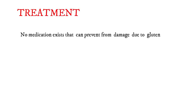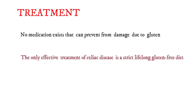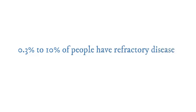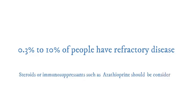No medication exists that can prevent damage due to gluten. The only effective treatment is a strict lifelong gluten-free diet, which leads to recovery of the intestinal mucosa and improves symptoms. If the disease is ignored, it can result in cancers such as intestinal lymphoma. Between 0.3% to 10% of people have refractory disease, meaning persistent villus atrophy on a gluten-free diet for more than 12 months. If alternative causes have been eliminated, steroids or immunosuppressants such as azathioprine should be considered.